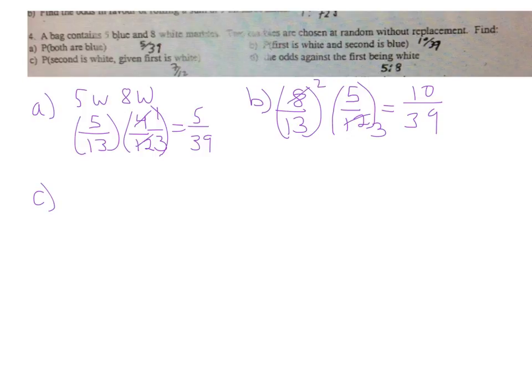For C, the probability of the second is white given the first is white. What we're going to do with that is that if the first one was white already, when we're drawing the second one, we only have 7 left out of the 8 because we already used 1 because we got 1 white. And there were only 12 marbles left to draw from. So the probability here is just 7 in 12 because the first probability has already happened that we selected a white one.